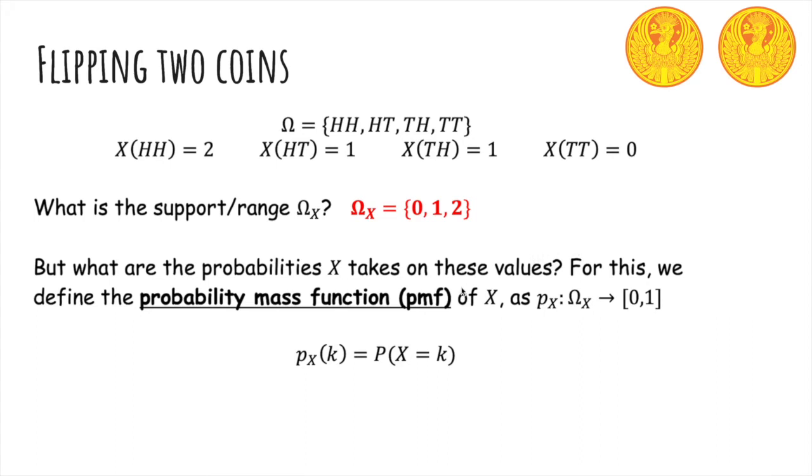But what are the probabilities X takes on these values? For this, we define the probability mass function of a random variable X. We denote it P sub capital X, which maps outcomes in its range to zero, one, such that PX of K is the probability X equals K.